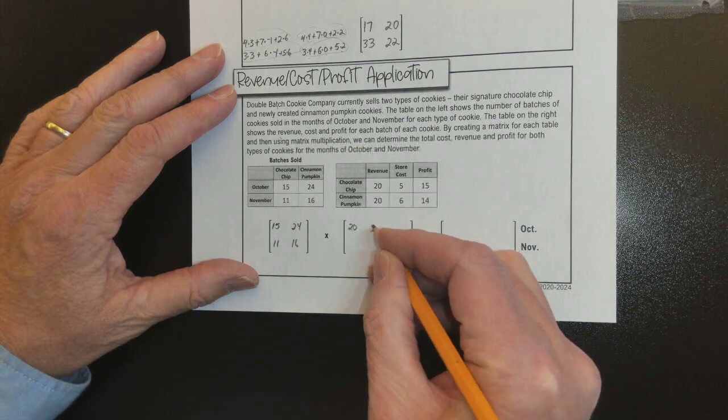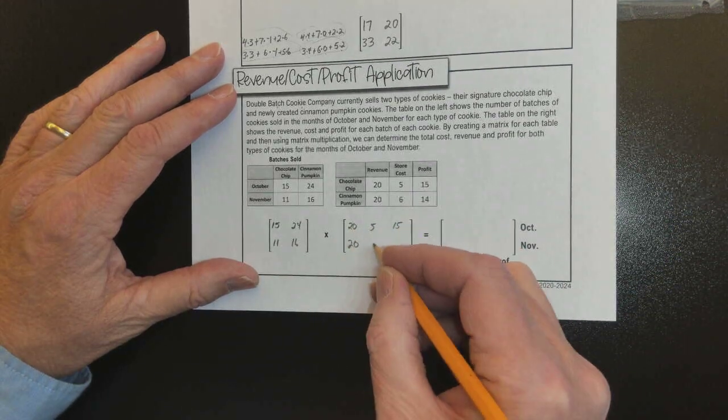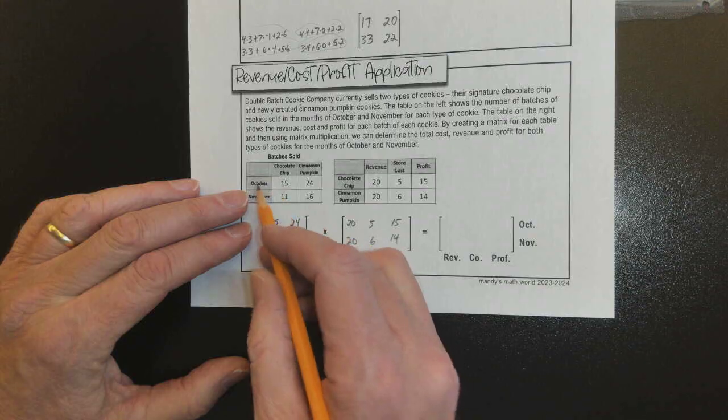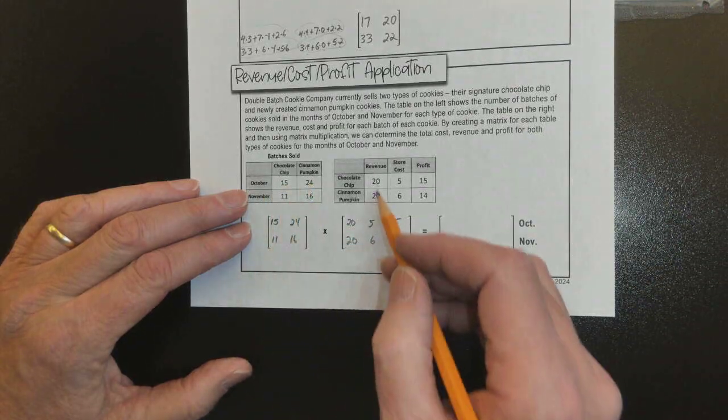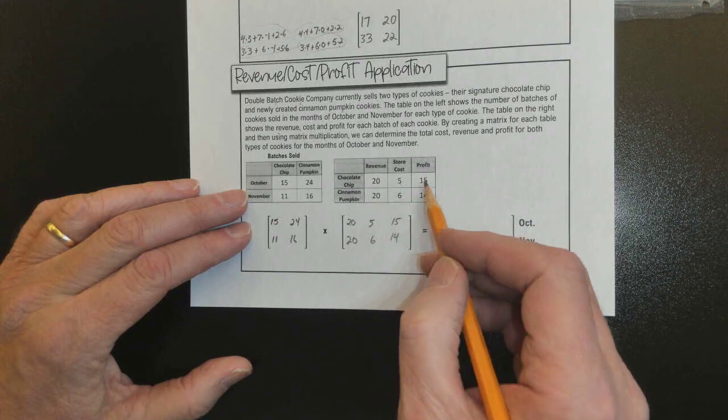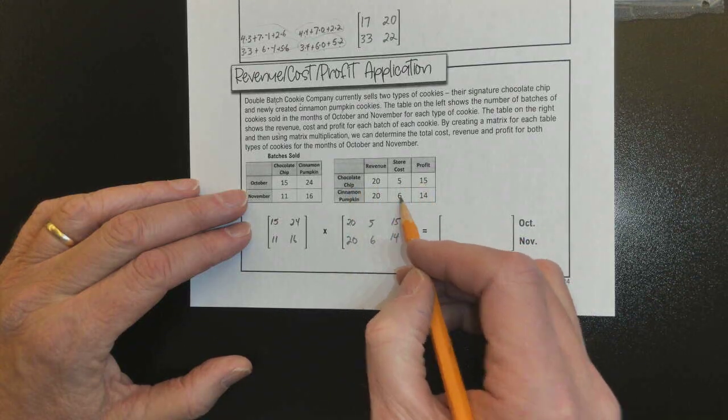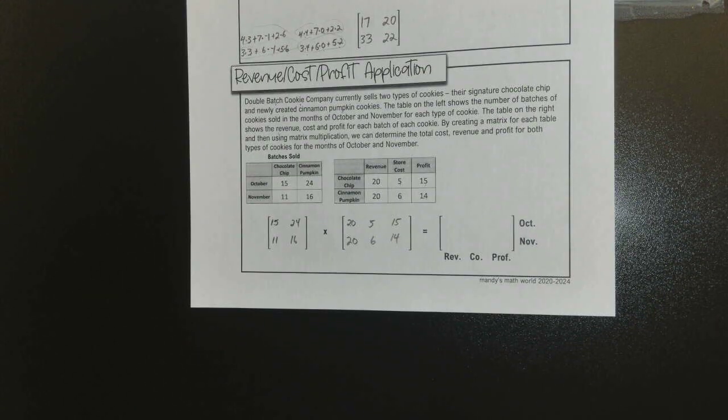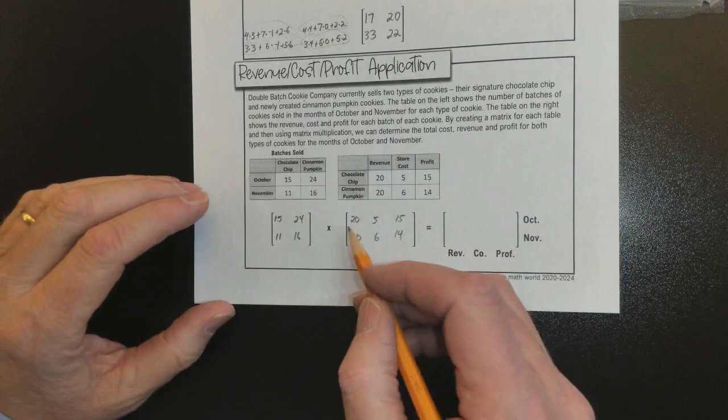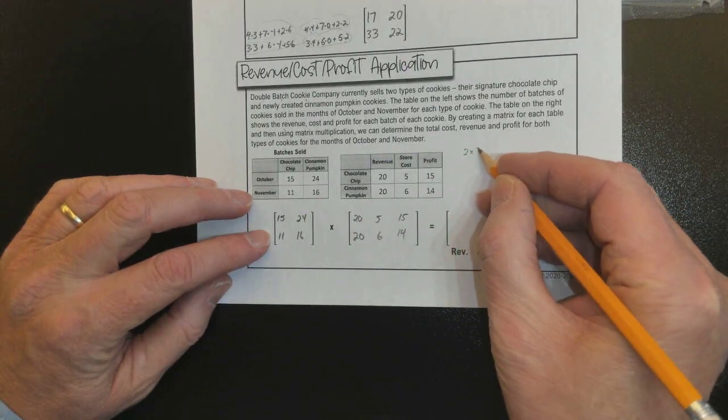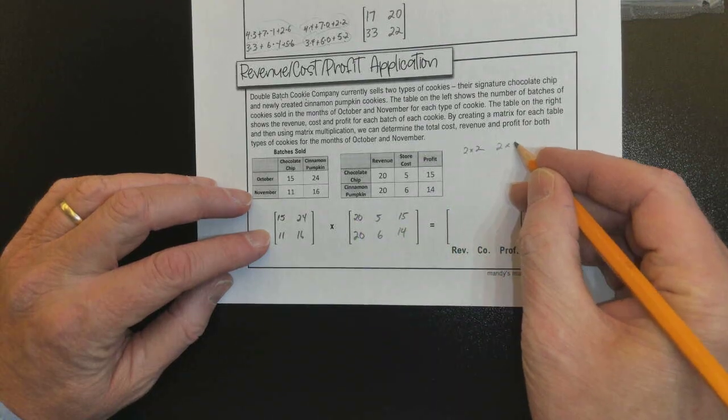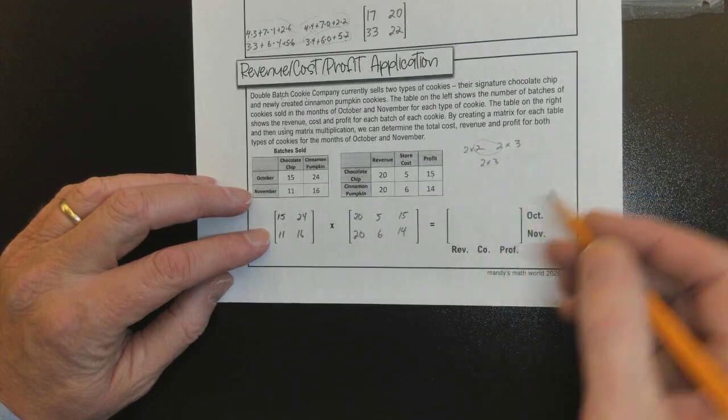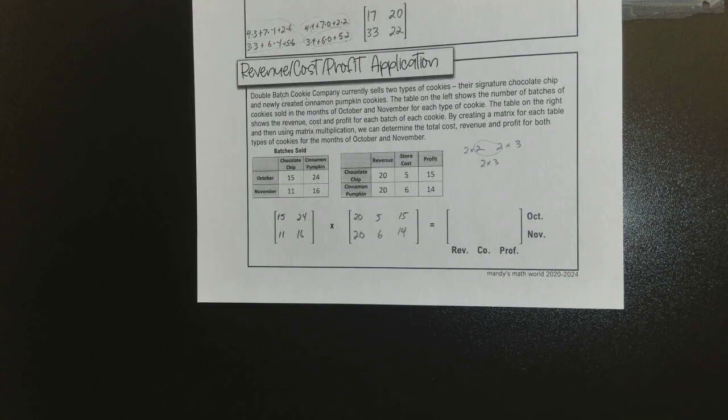Well, let's go ahead and make the matrices that come out of these tables. Twenty-five, fifteen, twenty-six, and fourteen. And you can see batches sold of each kind in October. Batches sold of each kind in November. Revenue, store cost, and profit for chocolate chip. Revenue, store cost, and profit for cinnamon pumpkin. Alright. I'm going to write these down. Will it work, by the way? What do we got? A two-by-two and a two-by-three. We're going to have what? A two-by-three. A two-by-three. And they even have this kind of set up in a two-by-three, so very good.